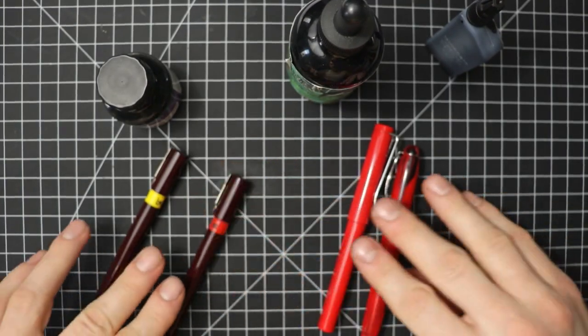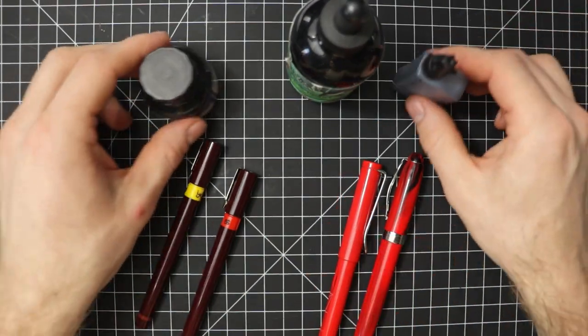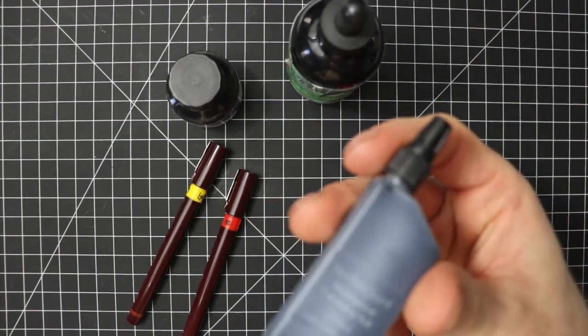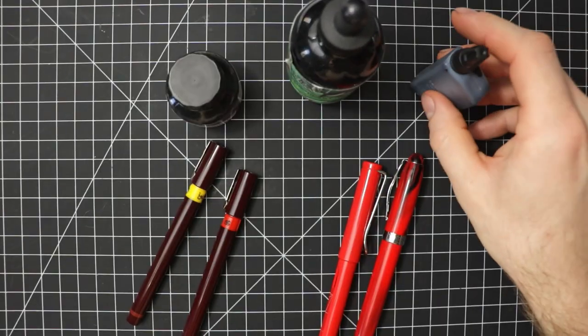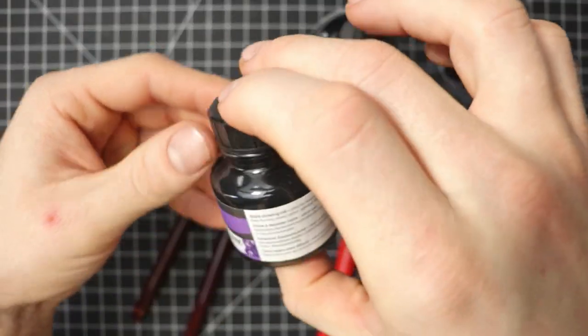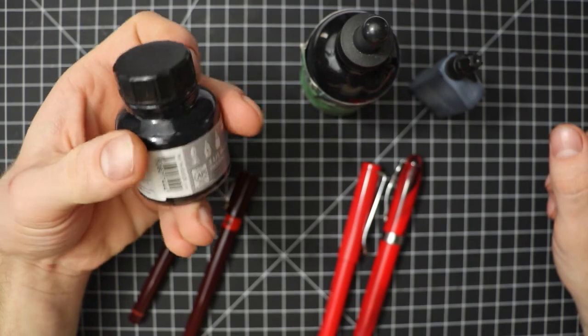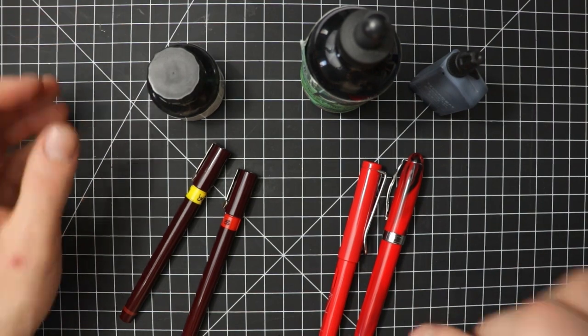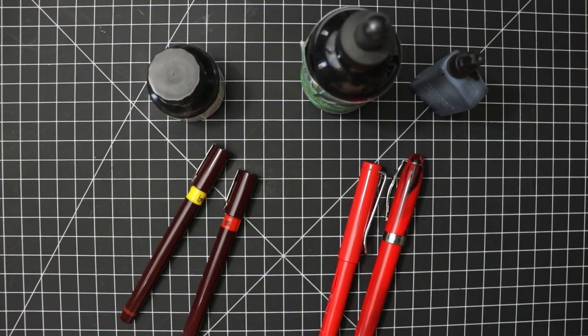Now the inks that I have here, these three for different pens. This is for rotring Isographs, fountain pens, and this is a black India ink I use for my dipping pens and stuff like that. Just make sure you're using the proper ink for your fountain pen and not mixing them together. I want to save everybody the hassle of having to go buy a whole new pen and wasting a lot of money.